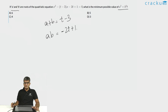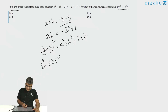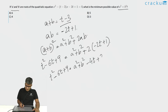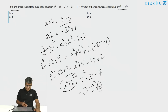From this we can calculate A² + B². We know (A+B)² = A² + B² + 2AB, so (T-3)² = A² + B² + 2(-2T+1). That gives T² - 6T + 9 = A² + B² - 4T + 2. Therefore A² + B² = T² - 2T + 7 = (T-1)² + 6. The minimum possible value of A² + B² is 6, which is option A.